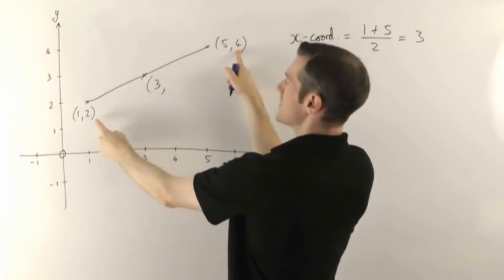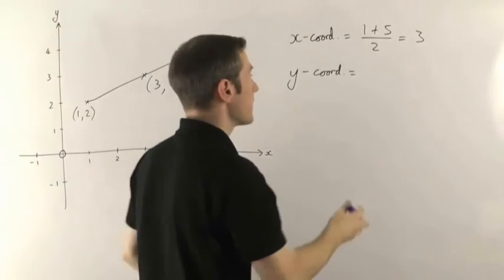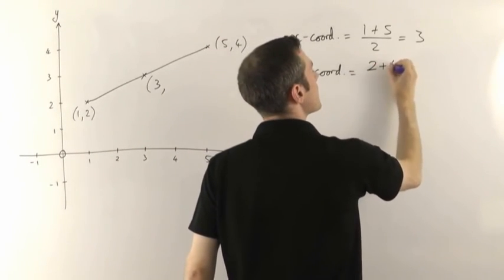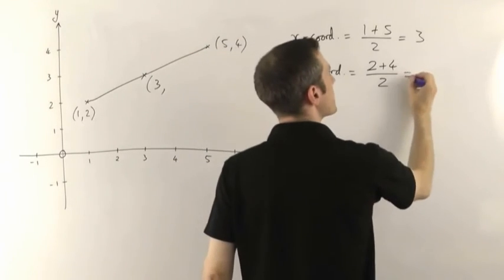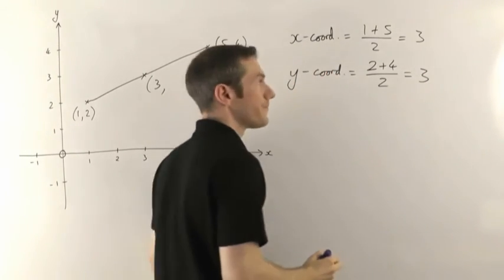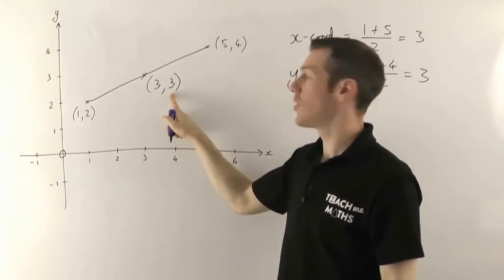So you add these two numbers together, your two y coordinates 2 plus 4, and then we divide by 2. Add up the two points and divide them by 2. 2 plus 4 is 6, divide that by 2 again you get 3. So the coordinates of our midpoint are 3 comma 3.